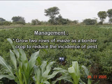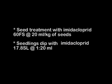For management, grow two rows of maize as a border crop to reduce the incidence of pest. Seed treatment with imidacloprid 60 FS at the rate of 20 ml per kg of seeds is recommended. Seedling dip with imidacloprid 17.8 SL at the rate of 1 to 20 ml is also advised.